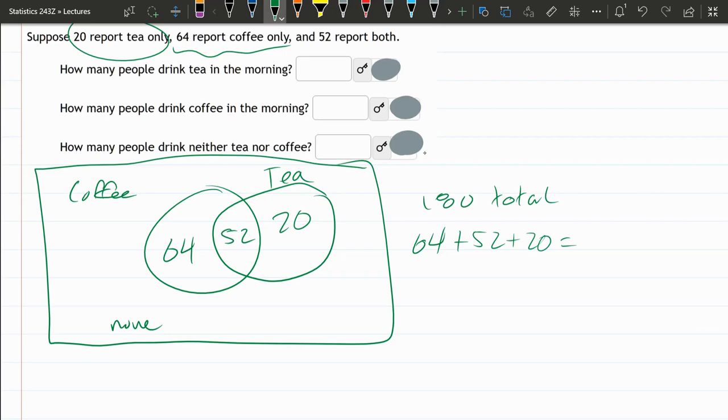Let's see, 4 and 2 is 6. 126, 116, 126, 136. So we have 180 total. We've accounted for 136, so there's 44 left over. That would be 180 minus 136, so there's 44 for none.